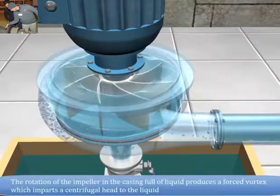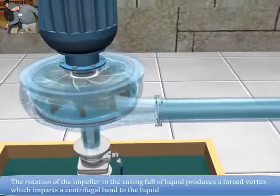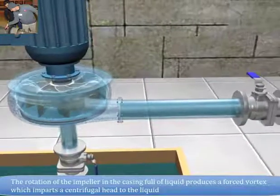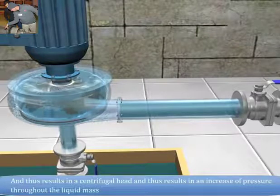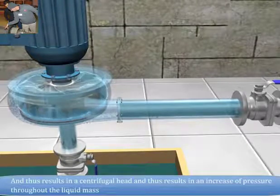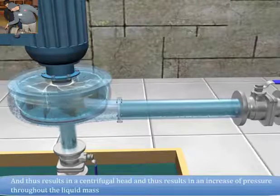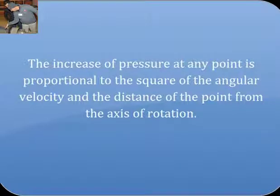The rotation of the impeller in the casing full of liquid produces a forced vortex which imparts a centrifugal head to the liquid and results in an increase of pressure throughout the liquid mass. The increase of pressure at any point is proportional to the square of the angular velocity and the distance of the point from the axis of rotation.